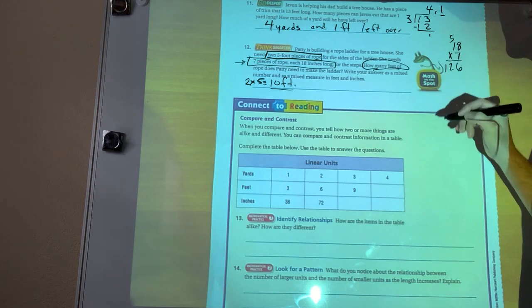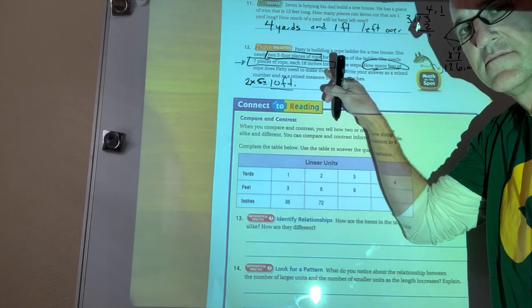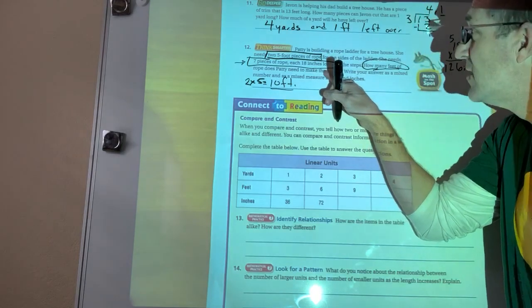So I'm going to have 126 inches, right? Because they're each 18 inches long. Does that make sense?